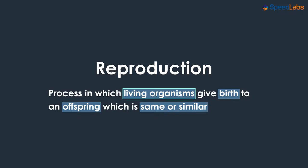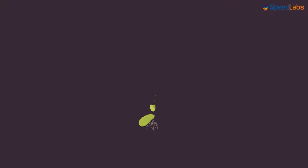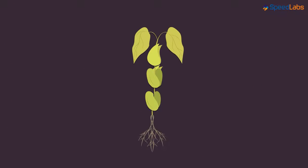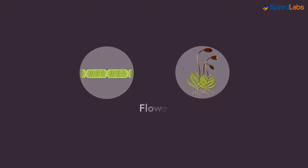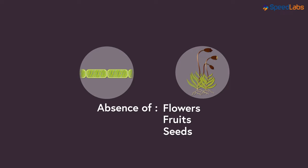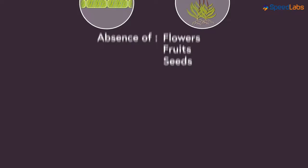When we say living organisms, it should include plants as well. We have seen a new plant emerging from a seed when sown in the ground. This seed comes from some plant. But have we seen all plants always giving us flowers, fruits, and seeds? No! There are many plants that do not bear flowers and fruits. So don't these plants reproduce, or do they reproduce by some other means? Let's answer all these questions in this video!